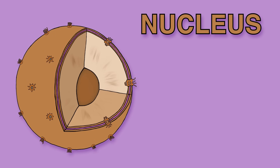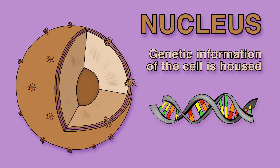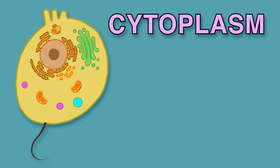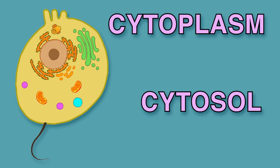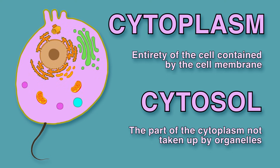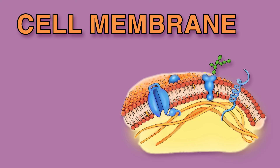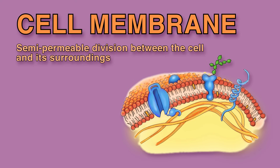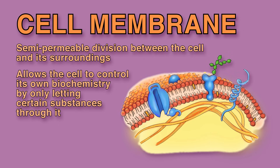The nucleus is where the genetic information of the cell is housed. The cytoplasm is not to be confused with the cytosol. The cytoplasm is the entirety of the cell contained by the cell membrane. The cytosol, on the other hand, is the part of the cytoplasm not taken up by organelles. The cell membrane is an important, semi-permeable division between the cell and its surroundings.